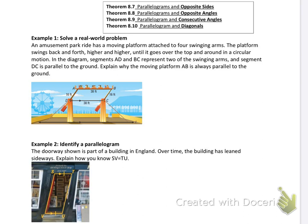Example 1: An amusement park ride has a moving platform attached to four swinging arms. The platform swings back and forth until it goes over the top in a circular motion. In the diagram, segments AD and BC are the 16-foot segments representing two swinging arms, and segment DC is right here,